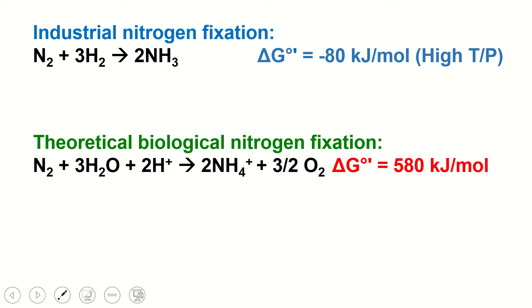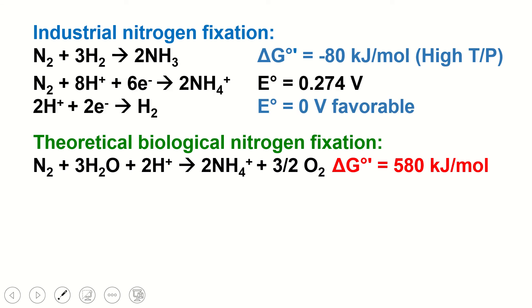So it's not just a kinetic problem for the biological system, but also a thermodynamic problem — formation of ammonia or ammonium is simply not favorable. The problem is the lack of hydrogen. If we look at the reduction potentials of the two half reactions — the reduction of nitrogen to ammonia, and the reduction of protons to hydrogen — the standard reduction potential is 0.274 volts for the reduction of nitrogen and zero for the reduction of hydrogen. So this reduction will be favored and gives a negative delta G, which is a favorable process under these standard conditions for industrial nitrogen fixation.